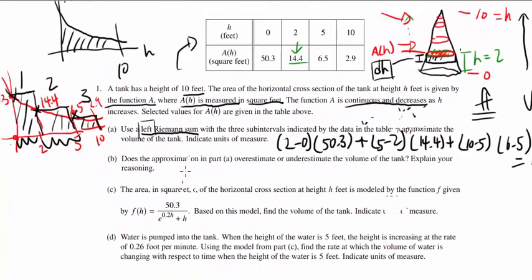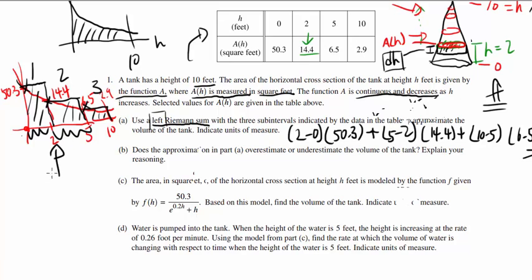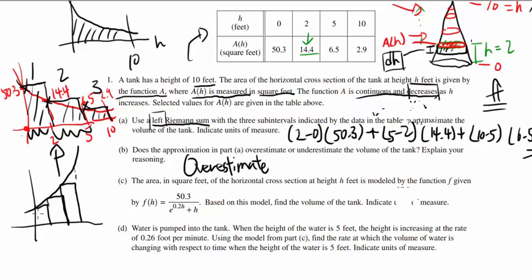Part B: Does the approximation in Part A overestimate or underestimate the volume of the tank? Obviously, the sum of the areas of the rectangles is greater than the actual area under the curve, so it's going to be an overestimate. Let's consider a case where the function is increasing. Then, if we use the left Riemann sum, you are going to have under approximation, because the area of the curve is greater than the sum of the areas of the rectangles. So in this case, the reason is overestimate, is because the function is decreasing, A of h is decreasing, and we are using the left Riemann sum.